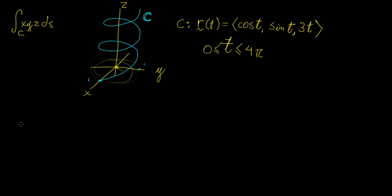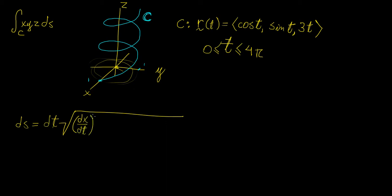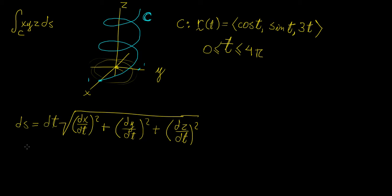The first thing we need to do is define what the element ds is going to be. Since we're dealing with a function of three variables, we're going to have to take three derivatives. So we're going to have dx/dt squared plus dy/dt squared plus dz/dt squared, all under a square root.